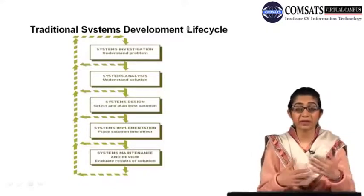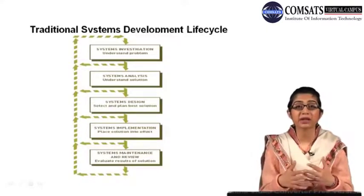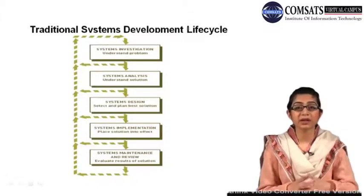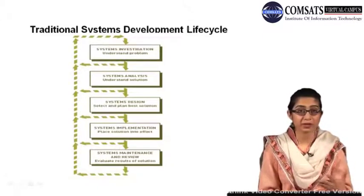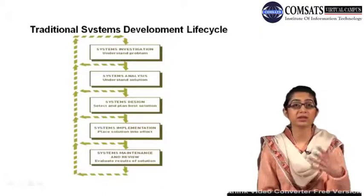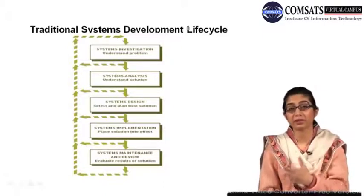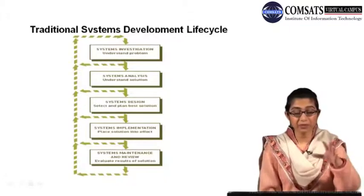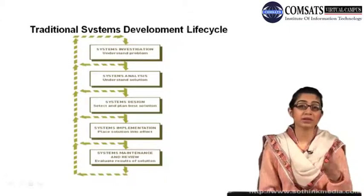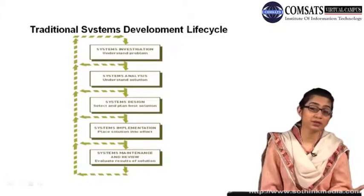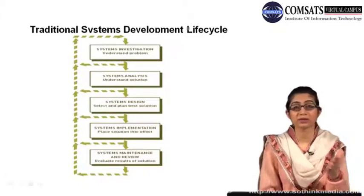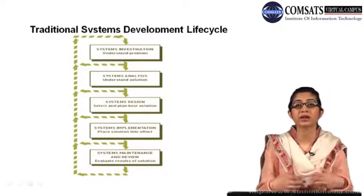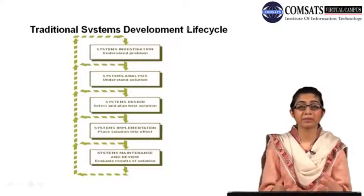As you look at the system development cycle, the traditional cycle had five phases: investigation, analysis, design, implementation, and maintenance. Whether you are using the traditional cycle, the prototype, RAD, or JAD, these are the techniques used for developing the information system.